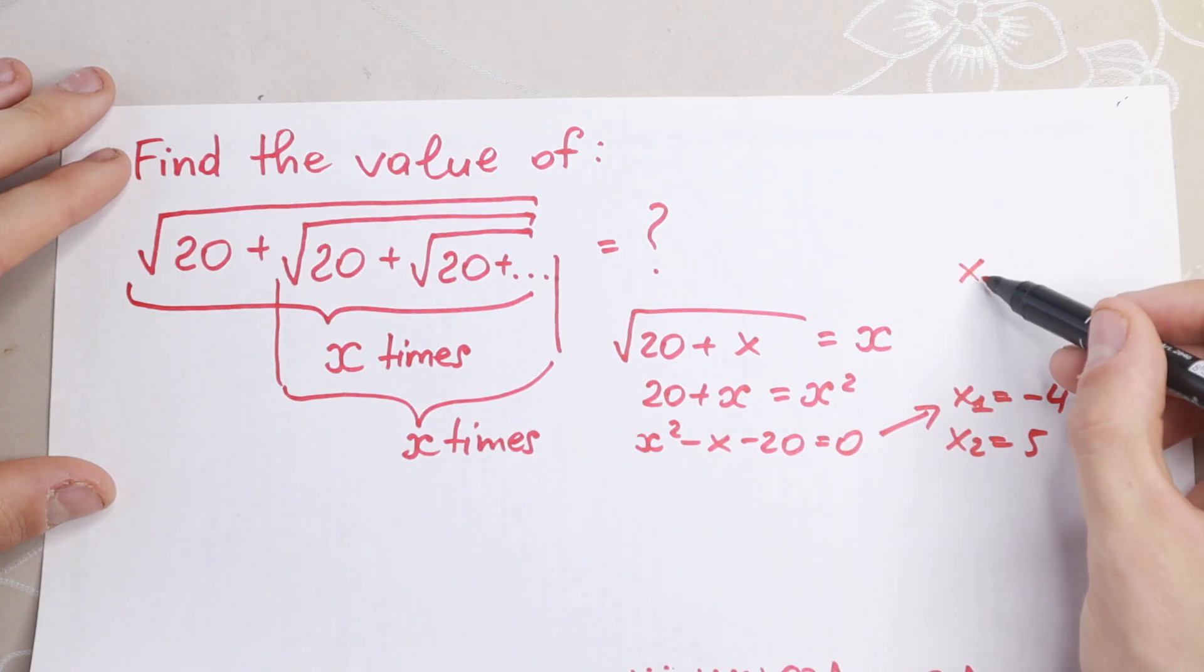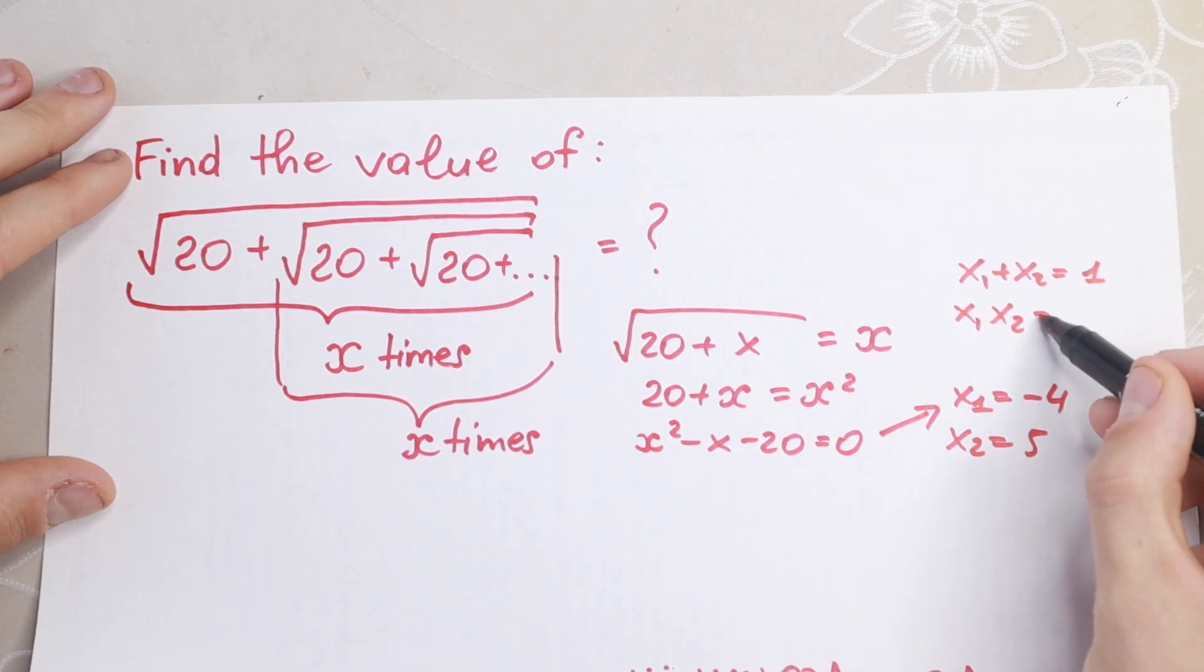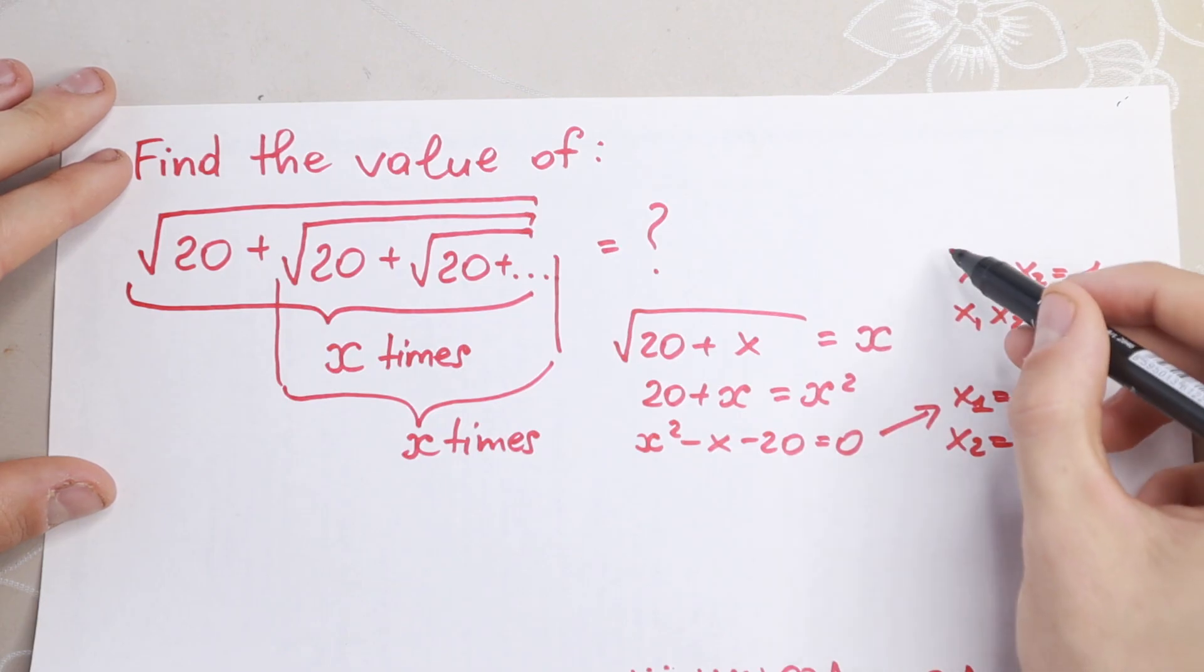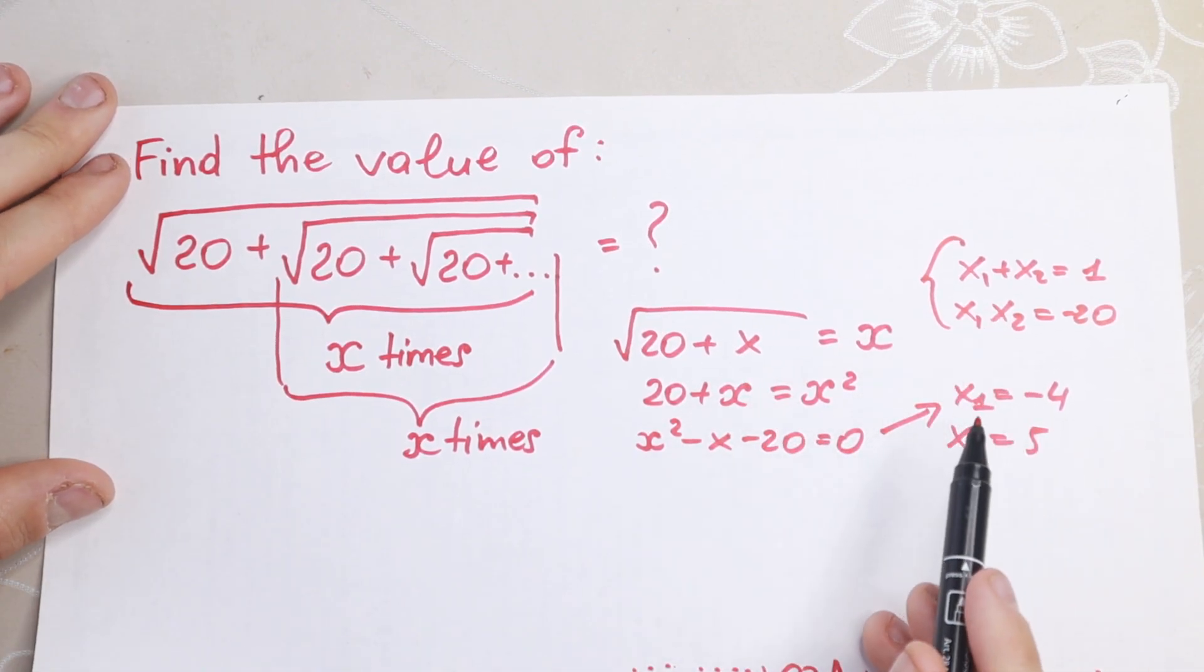Using the theorem—what theorem? x first plus x second equal to one, and x first times x second equal to minus 20. This is a really good theorem for how I solve this quadratic equation.